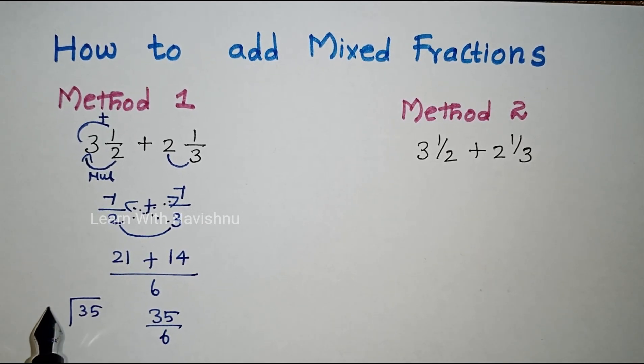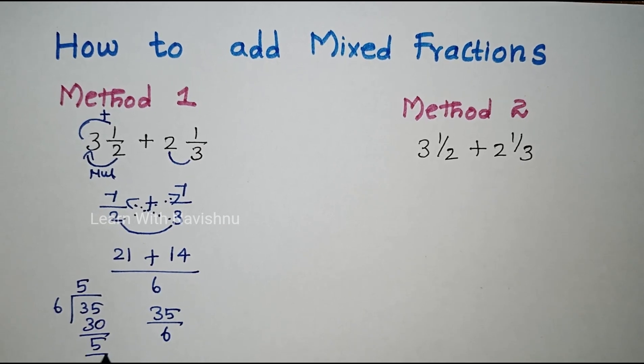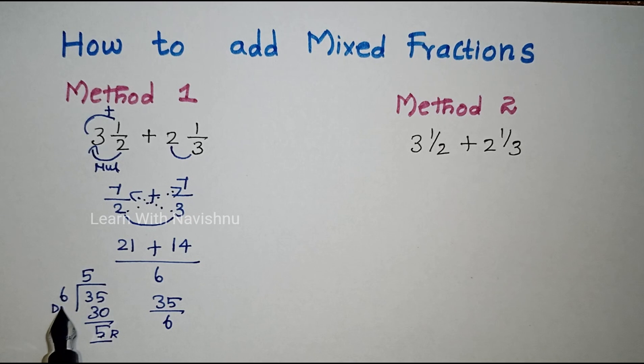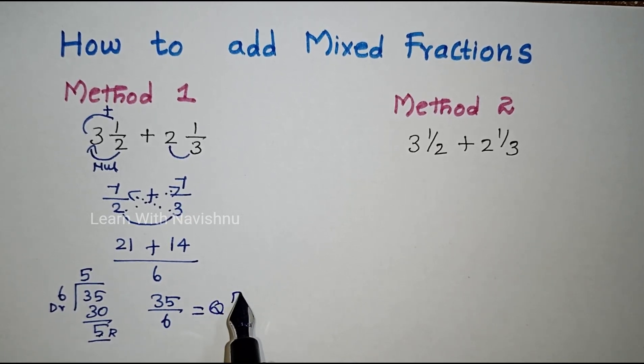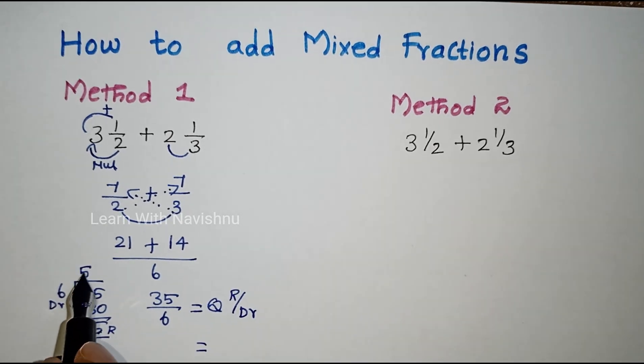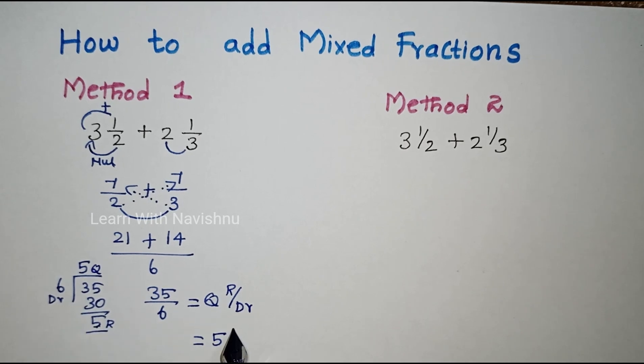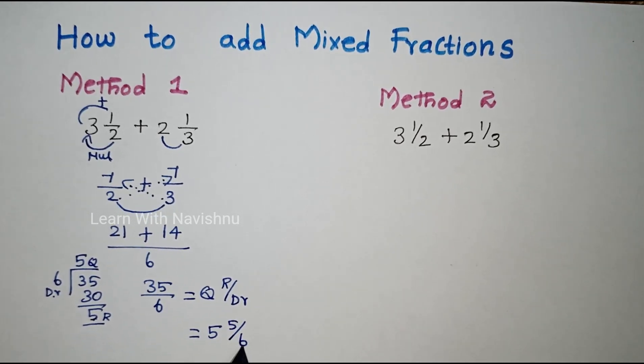35/6 is an improper fraction. We need to convert it to mixed fraction. We need to divide the numerator by denominator. 6 times 5 is 30. Remainder is 5. This number is the divisor. The formula is remainder over divisor.